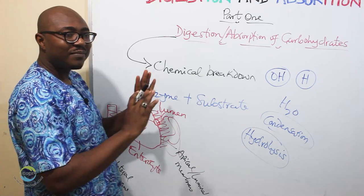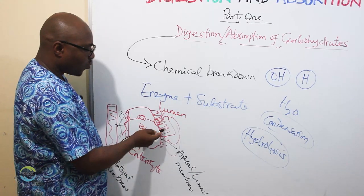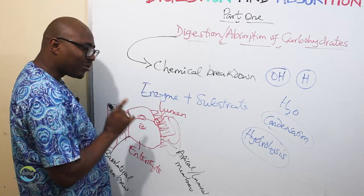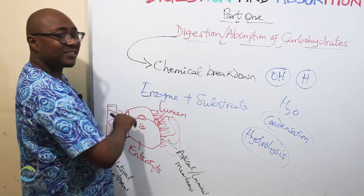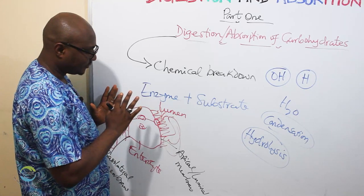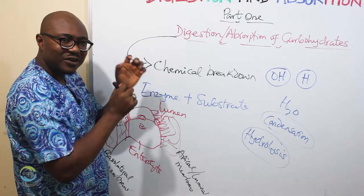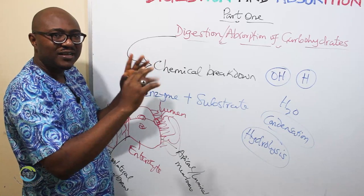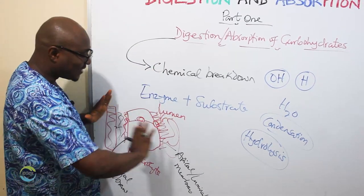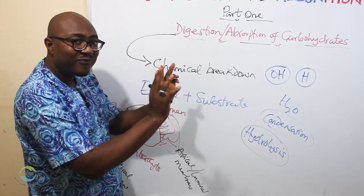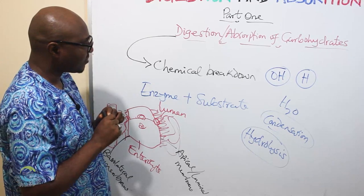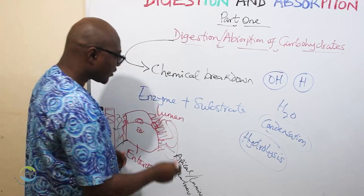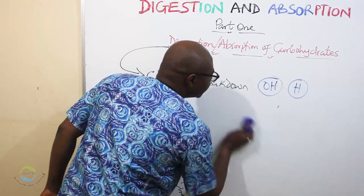Whenever you talk about absorption of any substance, you need to know: first, what transport mechanism it uses to cross the apical membrane; and second, what transport mechanism it uses to cross the basolateral membrane, because most times they can be different. For carbohydrates, there are different kinds of simple sugars — glucose is the most common, then galactose and fructose. So that is simply what absorption is about, although the one for fat is a bit more technical.